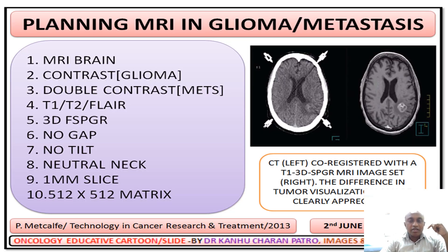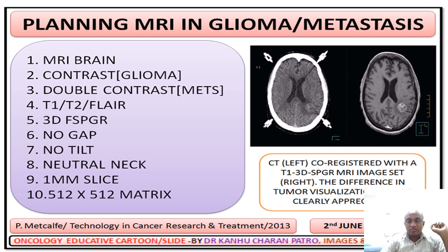When planning an MRI for a glioma or metastasis in radiation planning, we should ask for various requirements: MRI brain with contrast, if there is a glioma; double contrast for metastases; T1, T2 FLAIR sequence; 3D FSPGR sequence; no gap, no tilt, neutral neck; 1 mm slice thickness; 512x512 matrix.